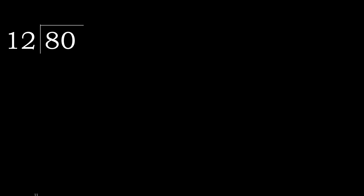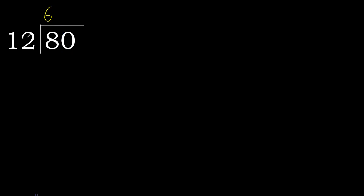80 divided by 12. 8 is less, therefore next. 80 is not less, therefore with 80 and 12: multiply by which number is nearest to 80 but not greater. 12 multiplied by 7 is 84, which is greater. Multiply by 6: 72 is not greater.